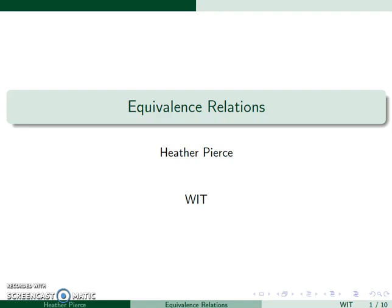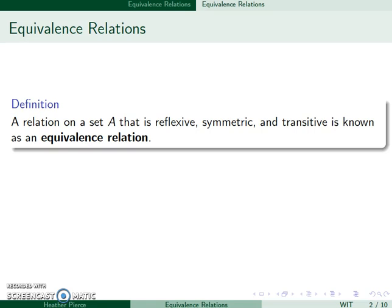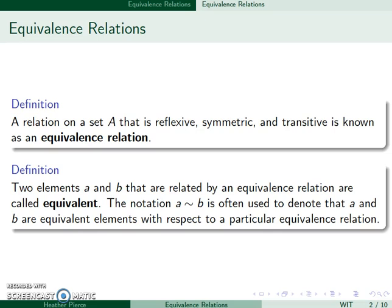We'll now look at equivalence relations. A relation on a set A that's reflexive, symmetric, and transitive is known as an equivalence relation. If we have two elements A and B that are related by an equivalence relation, we say they're equivalent, and we use the notation A tilde B to denote that A and B are equivalent elements with respect to our relation.